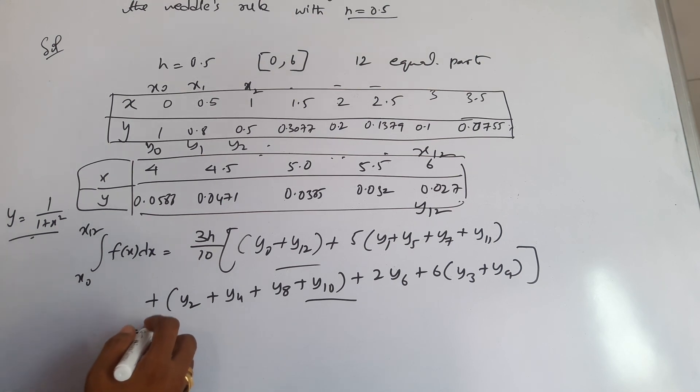After substituting all these values, when you simplify this using Weddle's rule, you get 1.407015.